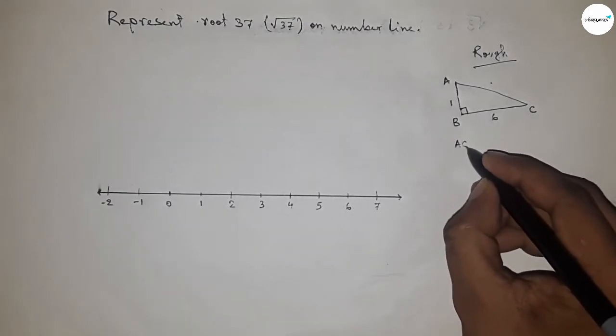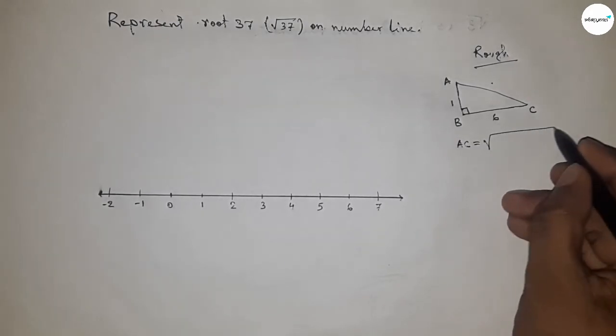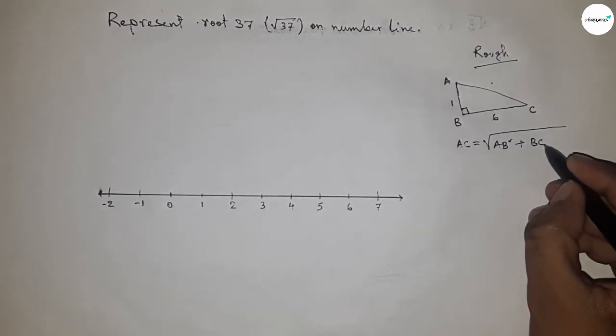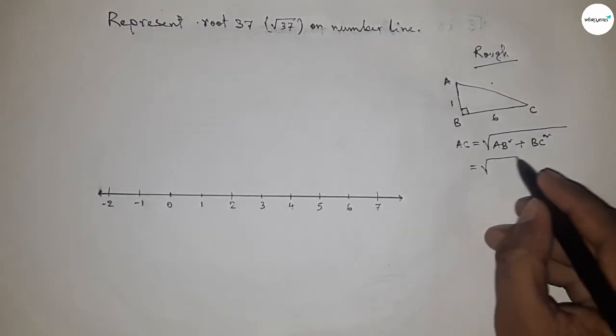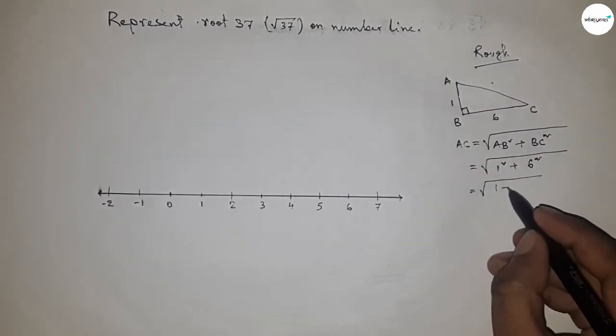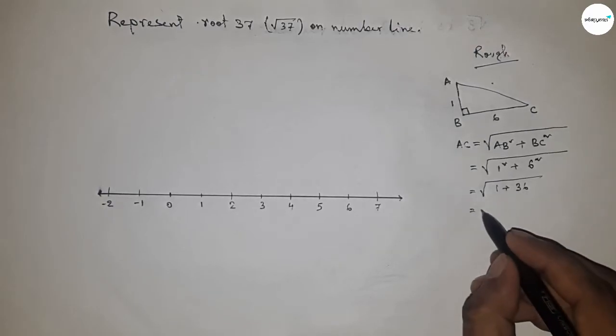Now putting in the values of height and base: 1² + 6² = 1 + 36.